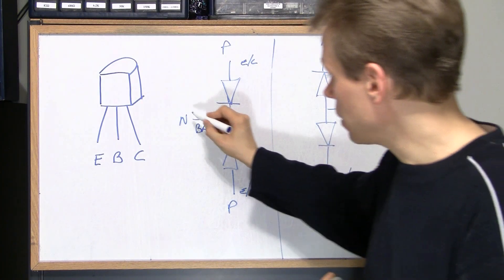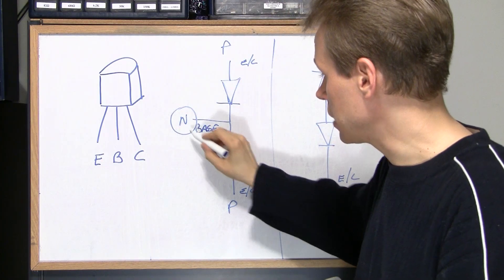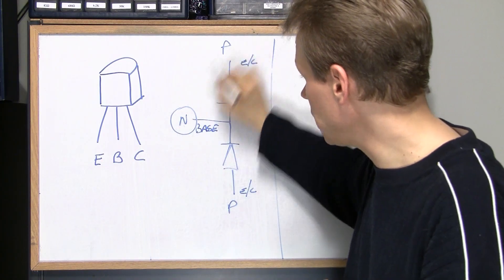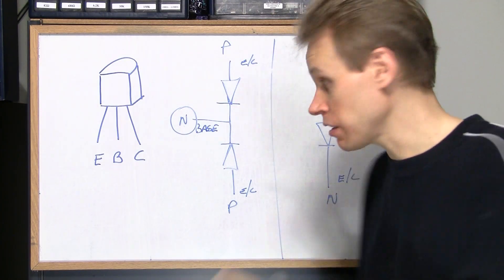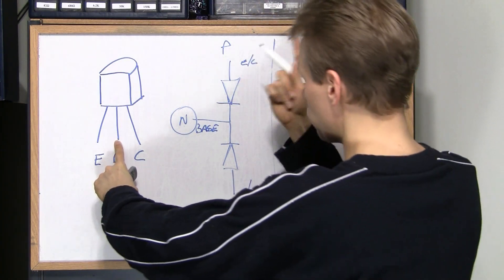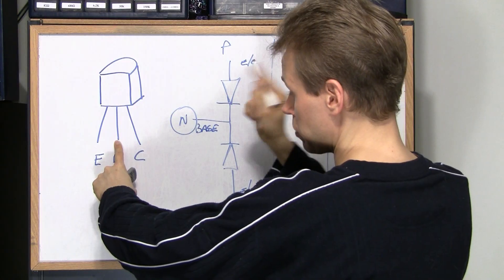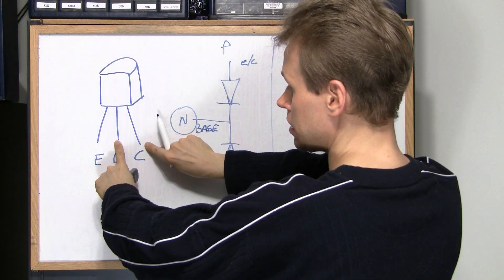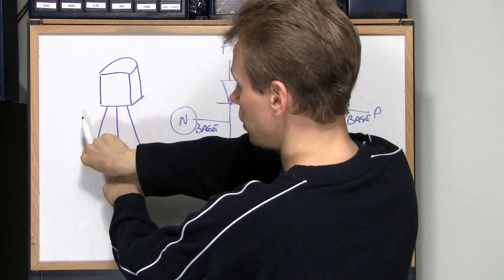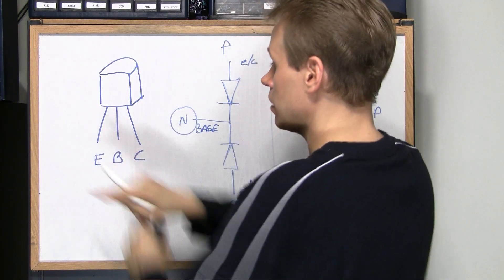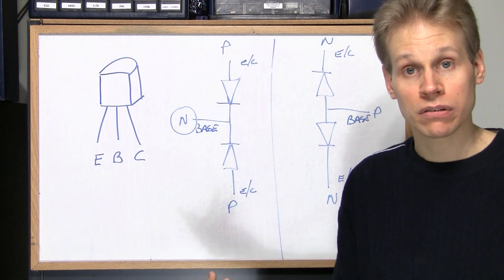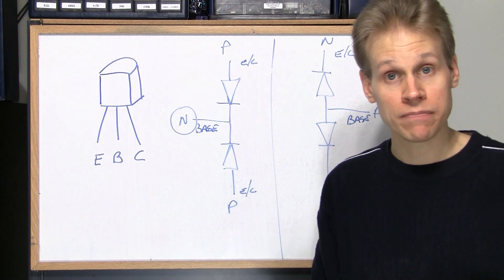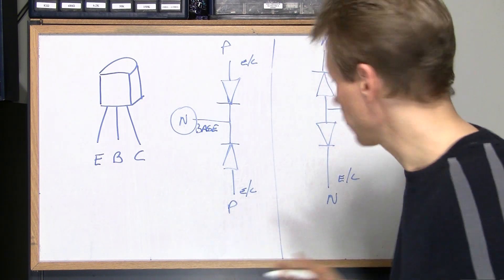So this here is the base lead. So you take the negative lead for a PNP transistor. You take the negative of your diode checker, touch it to the base, take the positive lead of your diode checker, touch it to the collector, it should read as a diode. And then remove that lead and touch it to the emitter and it should check as another diode. You've effectively just tested your transistor. It works if it tests out as two diodes in most cases.